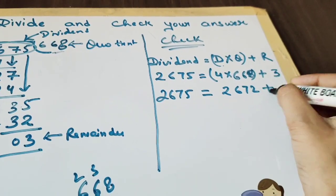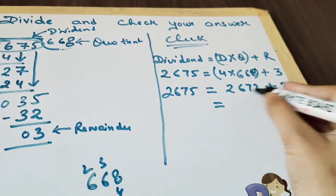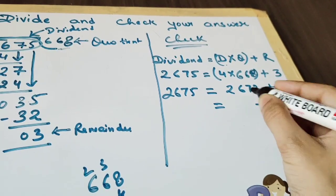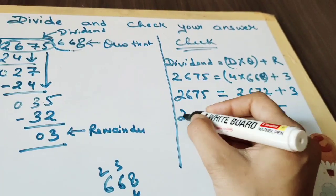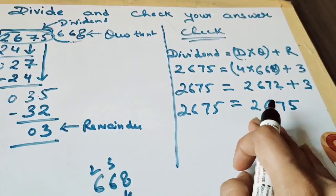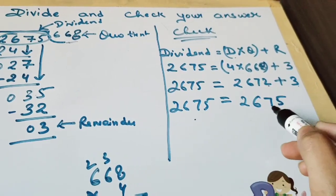2672 plus 3. Now let's add these: 3 plus 2 is 5 and the rest will be the same. So now we can see that our division is correct because we got the left hand side equals to right hand side.